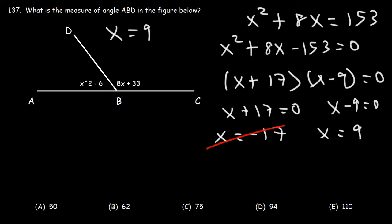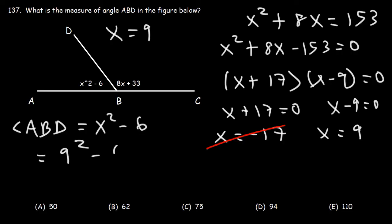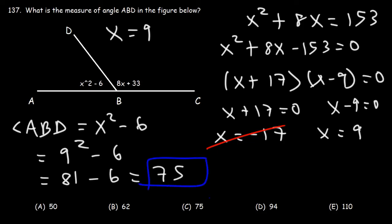Now we calculate angle ABD, which is x² minus 6. With x = 9: 9 squared is 81, and 81 minus 6 is 75. So the measure of angle ABD is 75°, and answer choice C is correct.